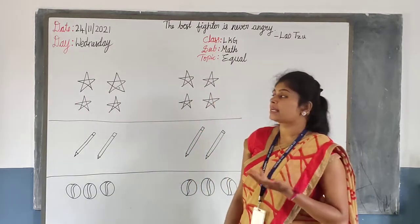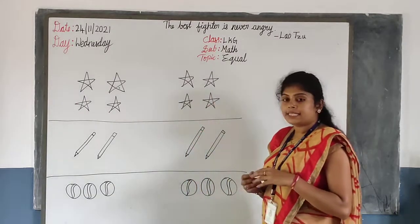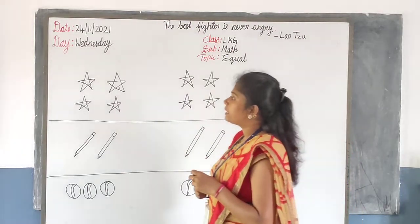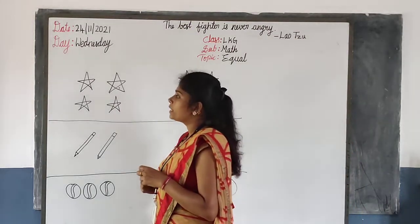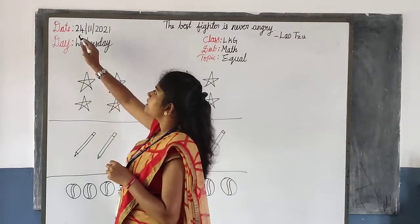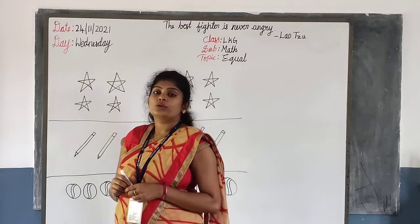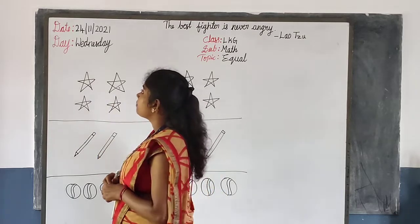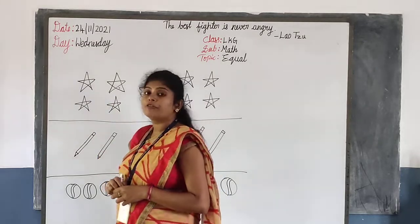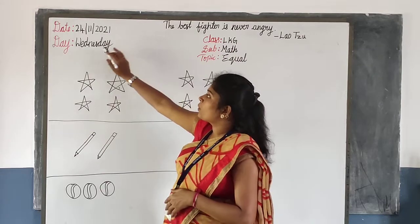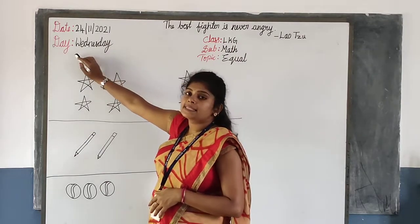Before going to the class, we will see about today's date and the day. Today's date is 2-4-24. We are in the 11th month. Today is Wednesday.